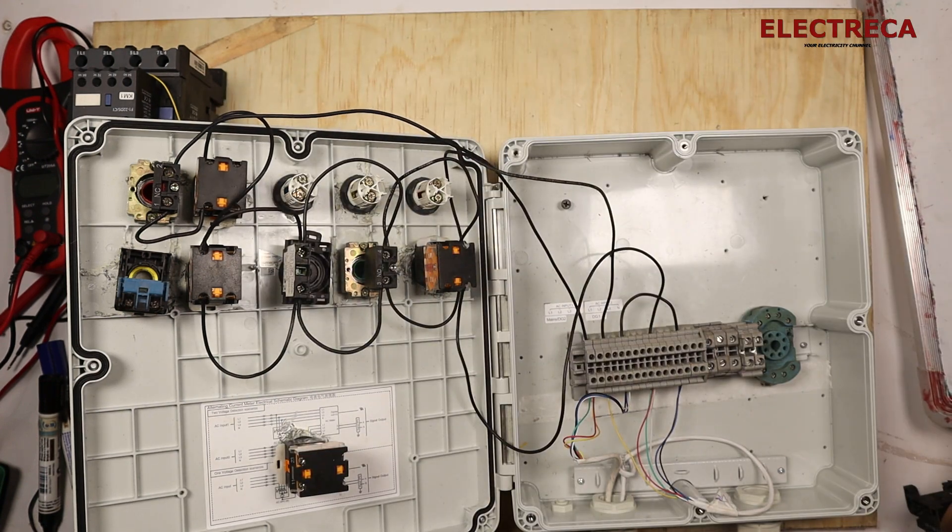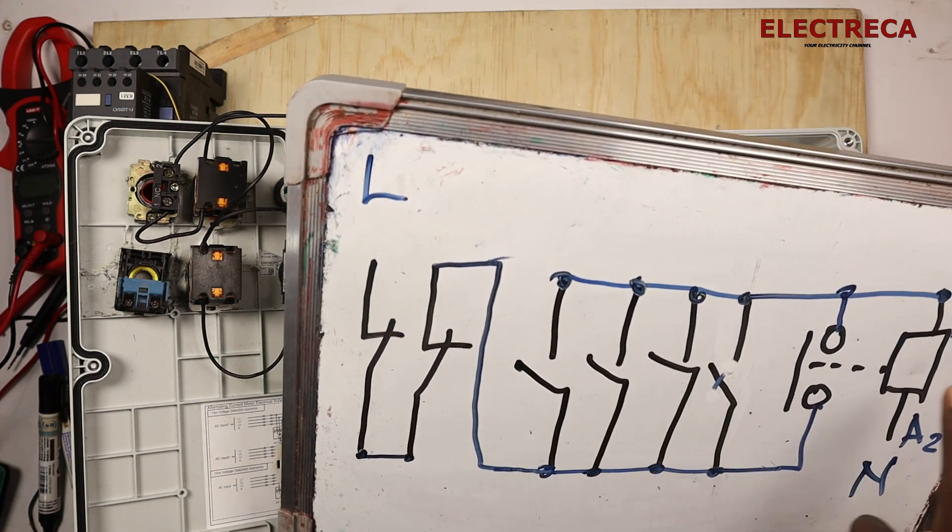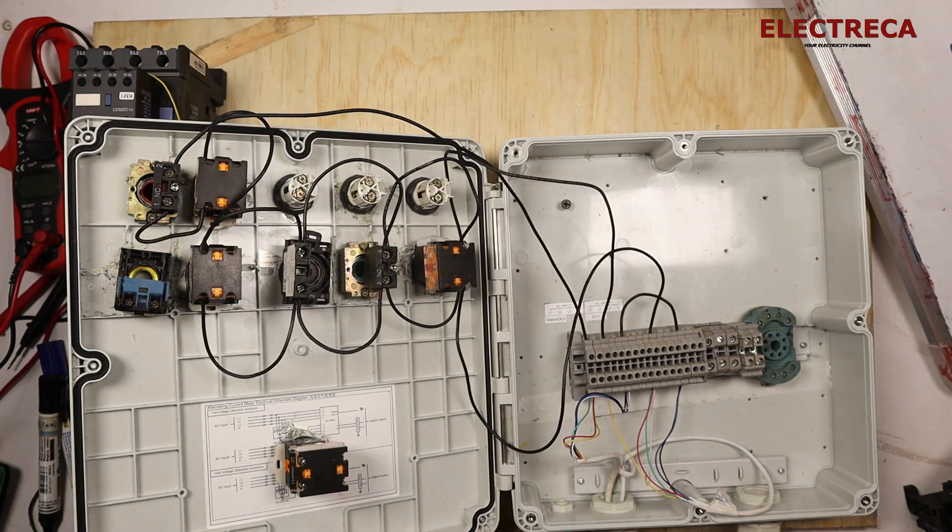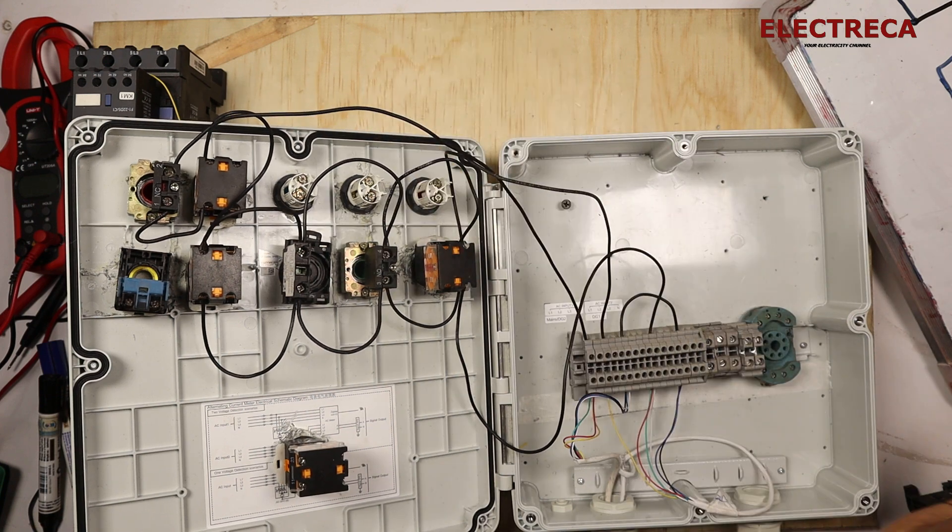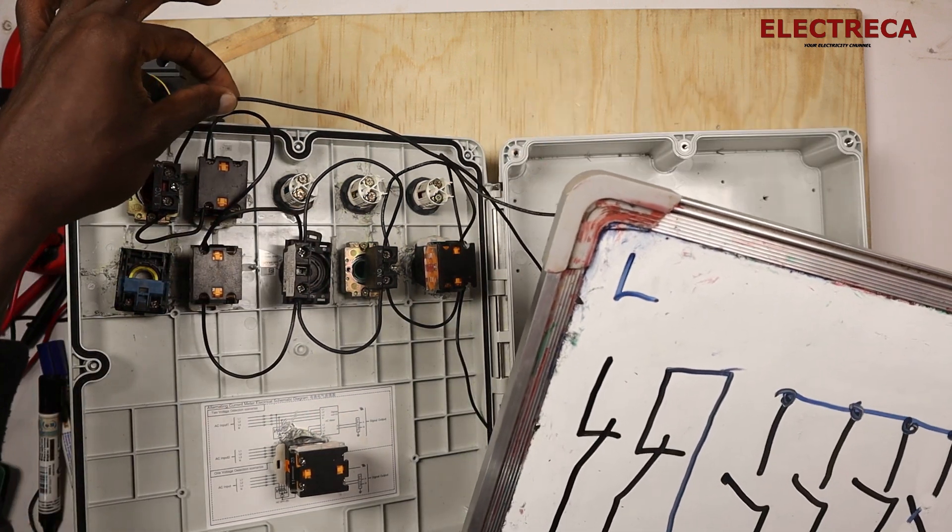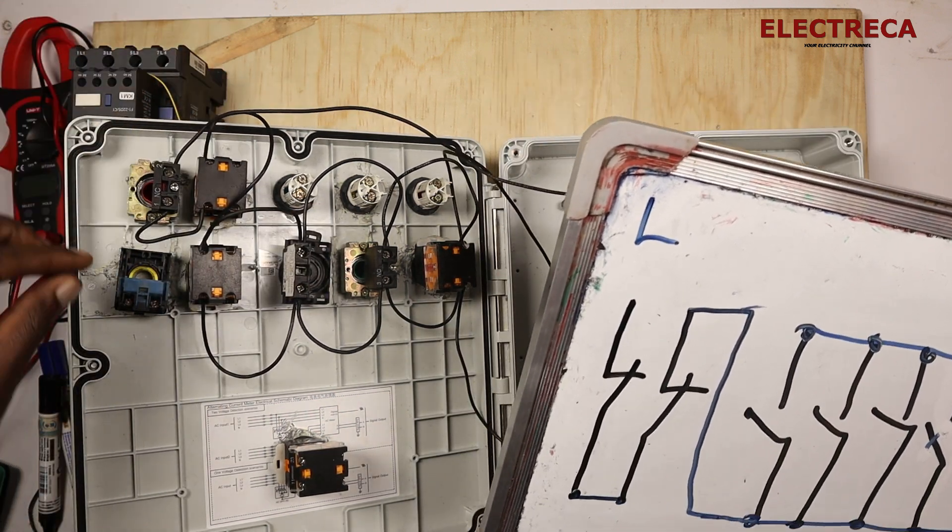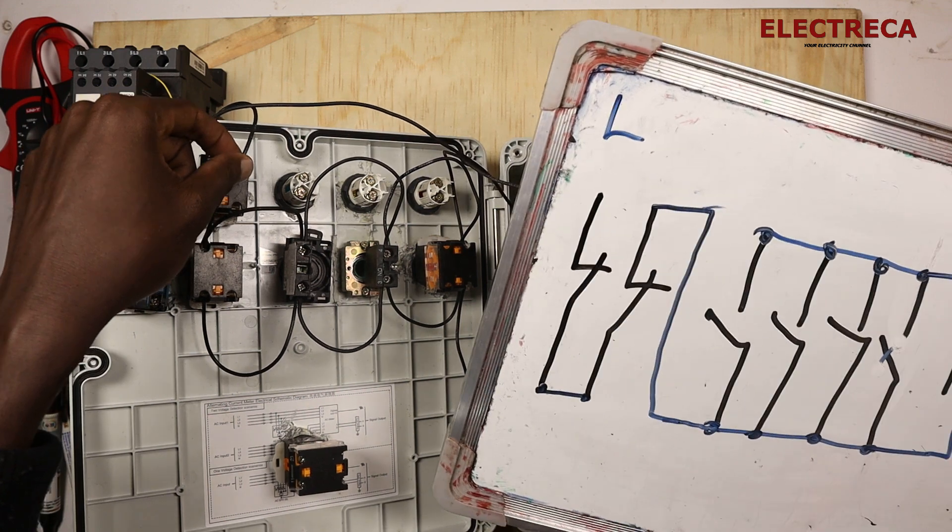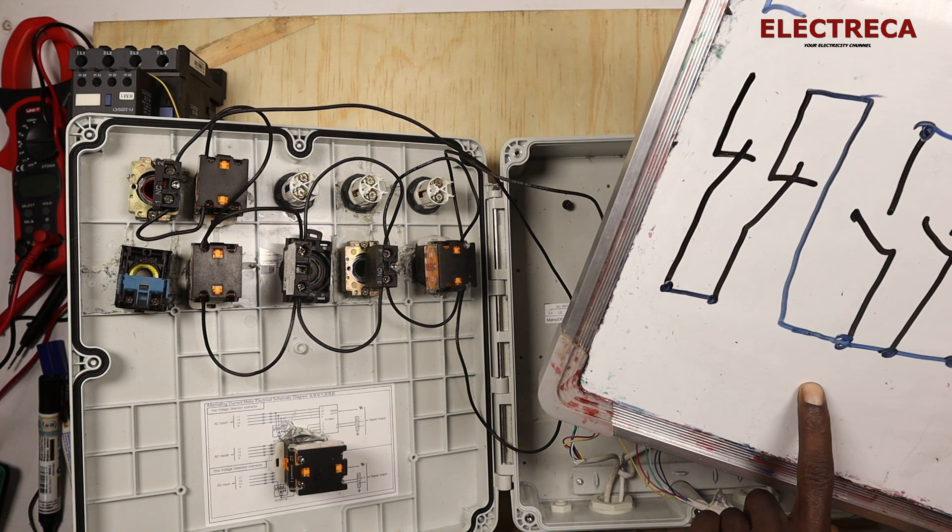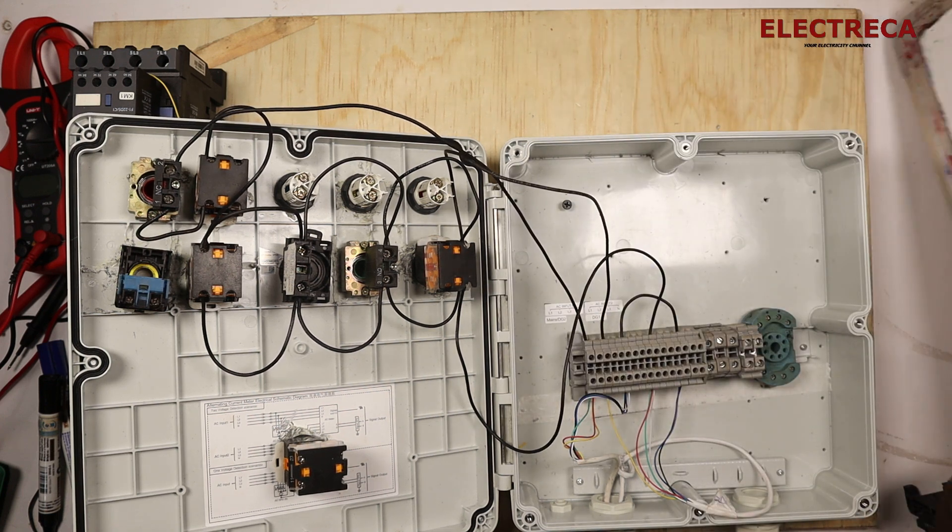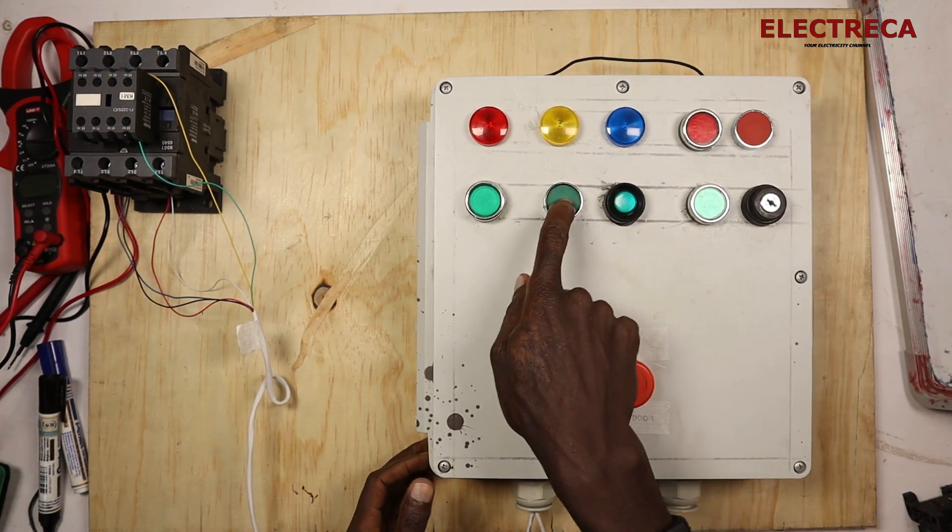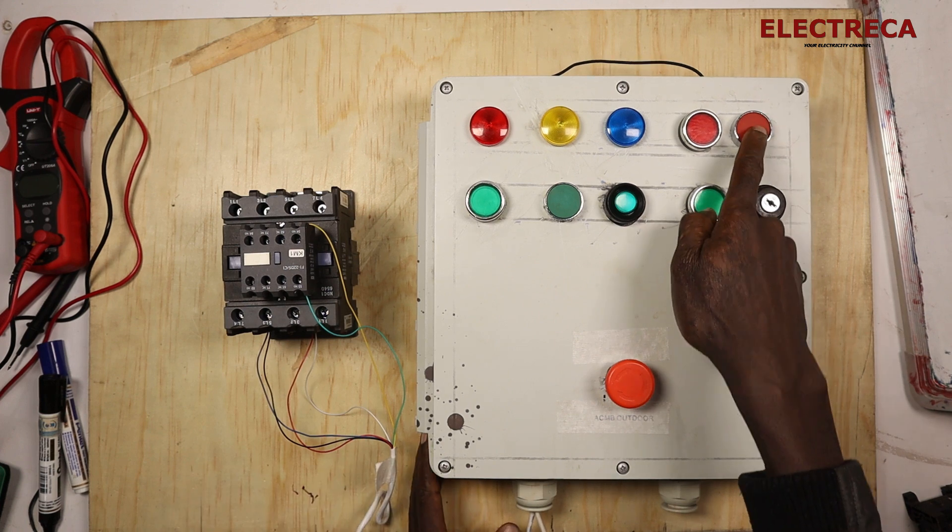Now we have one side that goes to A1. So if you realize we have our input here which is this, and then right here we have our output of the start button which connects this end. All right. That's why you're able to start the contactor in different positions. So that's how it's done.